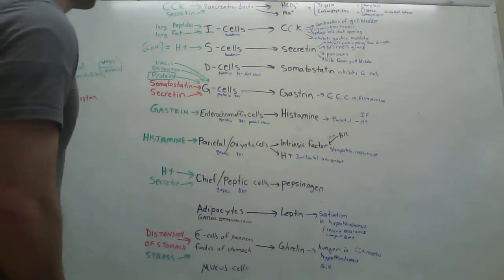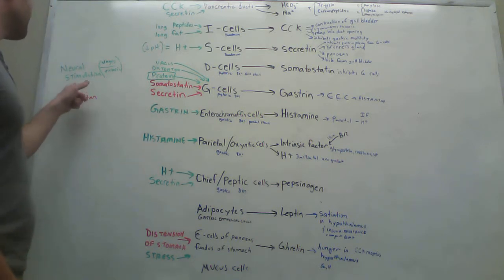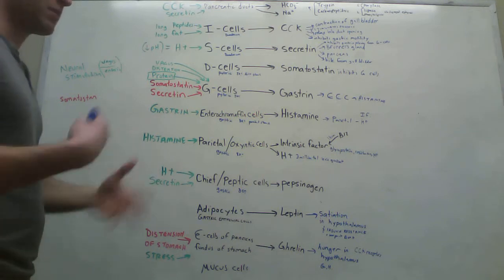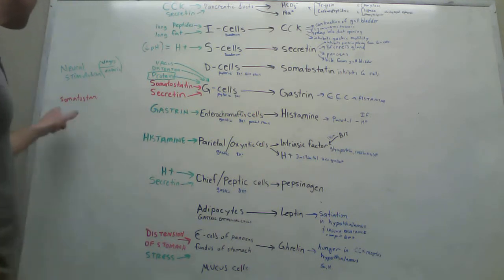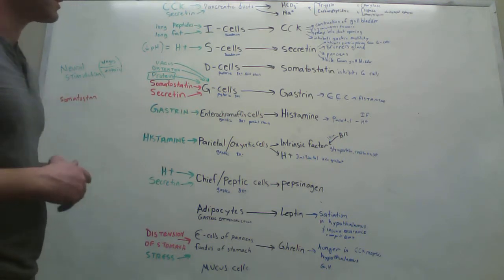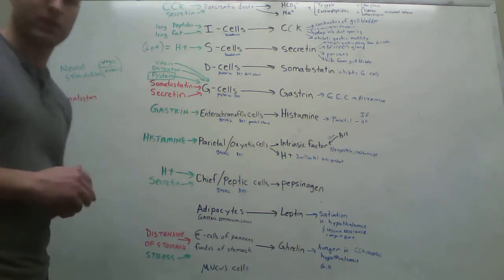And that is most everything here. So another important thing to note is just that the neural stimulation of the vagus and the enteric seems to stimulate hunger in this whole process, whereas the somatostatin seems to inhibit it in terms of these cells. And I think that is most everything. Quite a lot of information here.